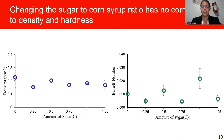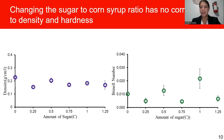When considering the changes in the corn syrup to sugar ratio, we saw that there was really no correlation to the density and hardness. Across the bottom axis is the amount of sugar added, and we kept the total of sugar plus corn syrup constant at one and a quarter cups. When we change the ratio of sugar to corn syrup, there's no correlation in density or hardness number. This is because sugar is made up of sucrose and corn syrup is made up of glucose, and these two molecules have very similar properties. When crystallized, they have similar densities and bonding, so we would expect similar hardness and densities. Since they are all cooked to the same temperature, we would also expect the same amount of bubbles from the baking soda.